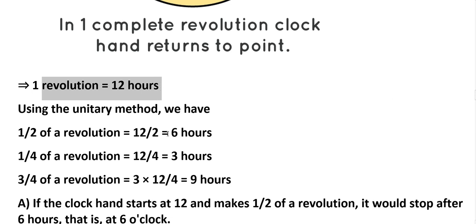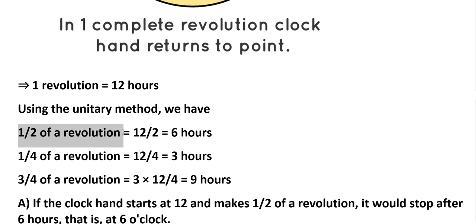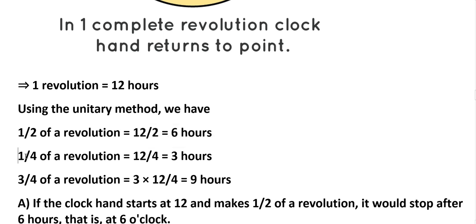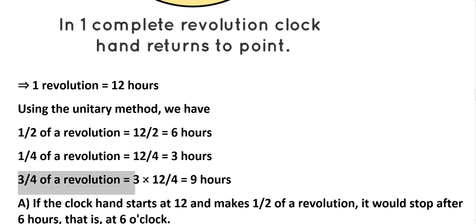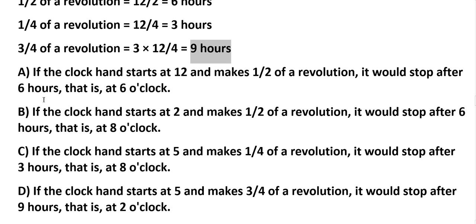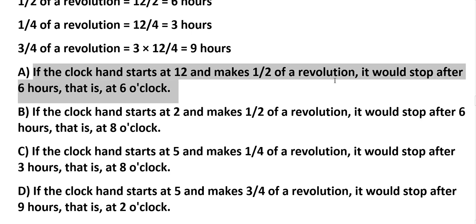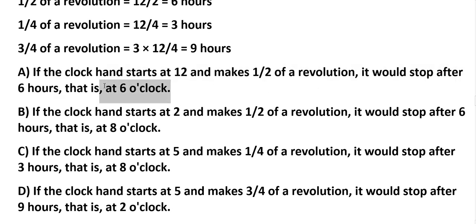Using the unitary method: half revolution means 12 ÷ 2, that equals 6 hours. One-fourth revolution means 12 ÷ 4, that equals 3 hours. Three-fourths revolution means 3 × 12/4, that equals 9 hours. A: if the clock hand starts at 12 and makes half revolution, it would stop after 6 hours — that is, at 6 o'clock.